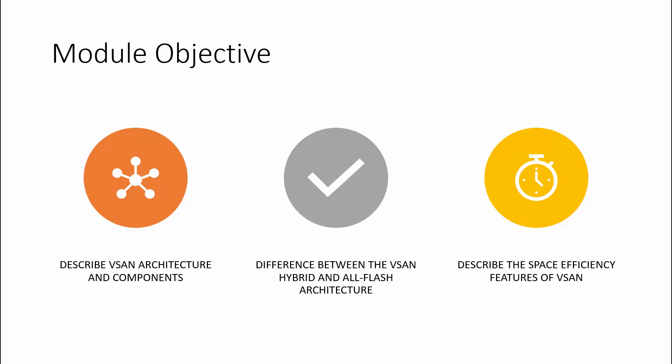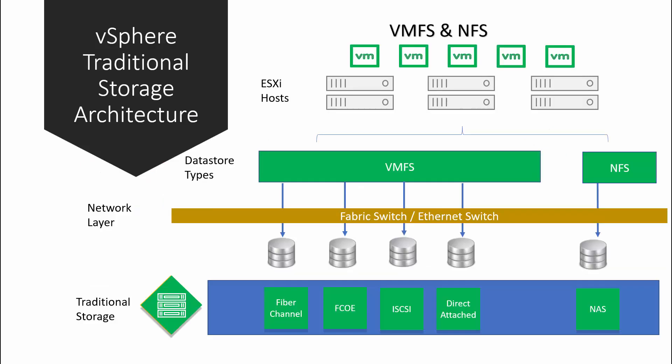Let us start from the traditional storage architecture to see how it works with VMware ESXi hosts and virtual machines. Traditional storage can be Fibre Channel, Fibre Channel over Ethernet, iSCSI, or direct-attached storage. Whatever the storage type, the next step is to create a logical unit — a LUN — either through a RAID controller or a storage processor. Once you create the logical unit, you connect it to the ESXi host by creating an iSCSI IQN or configuring zoning.